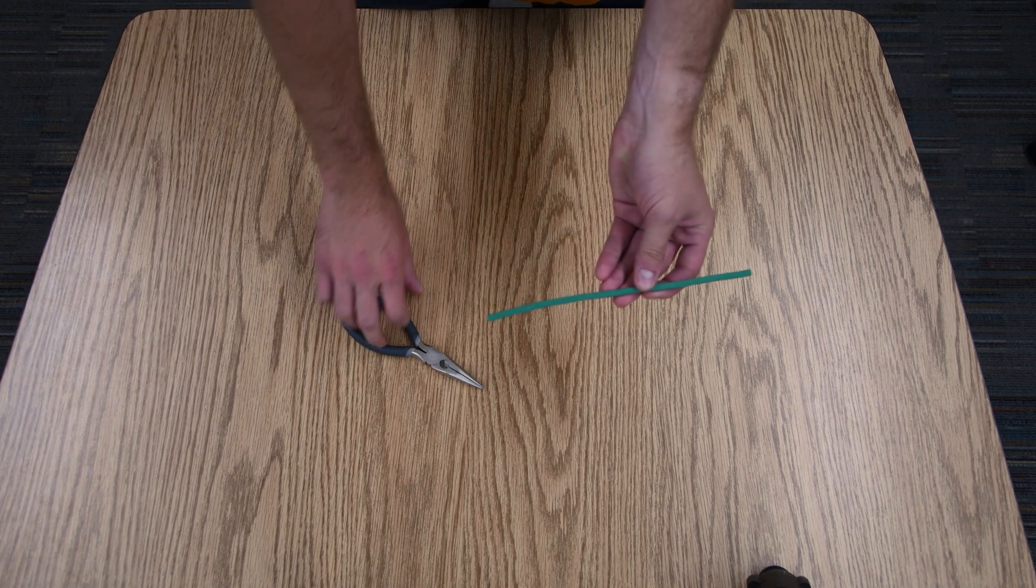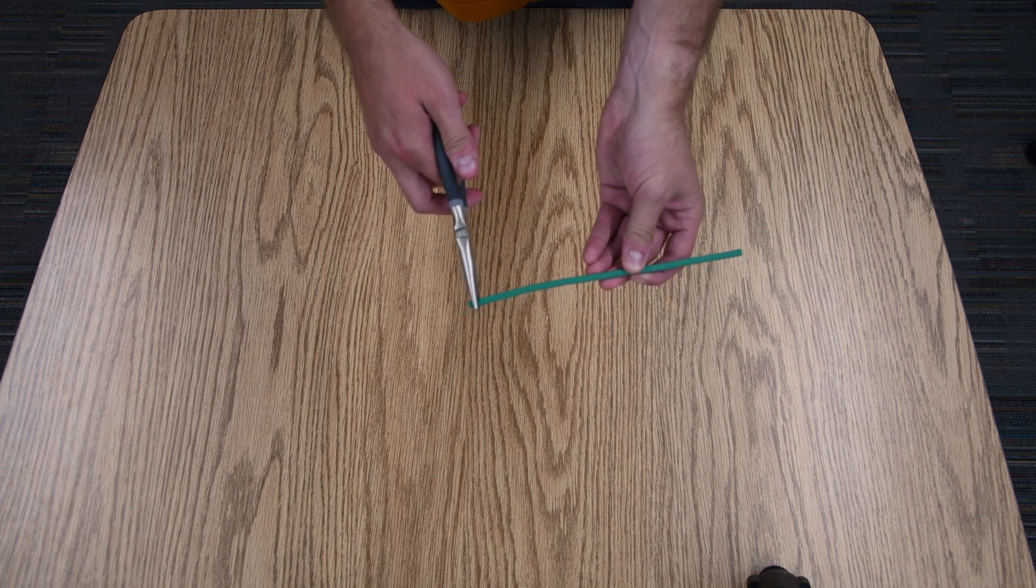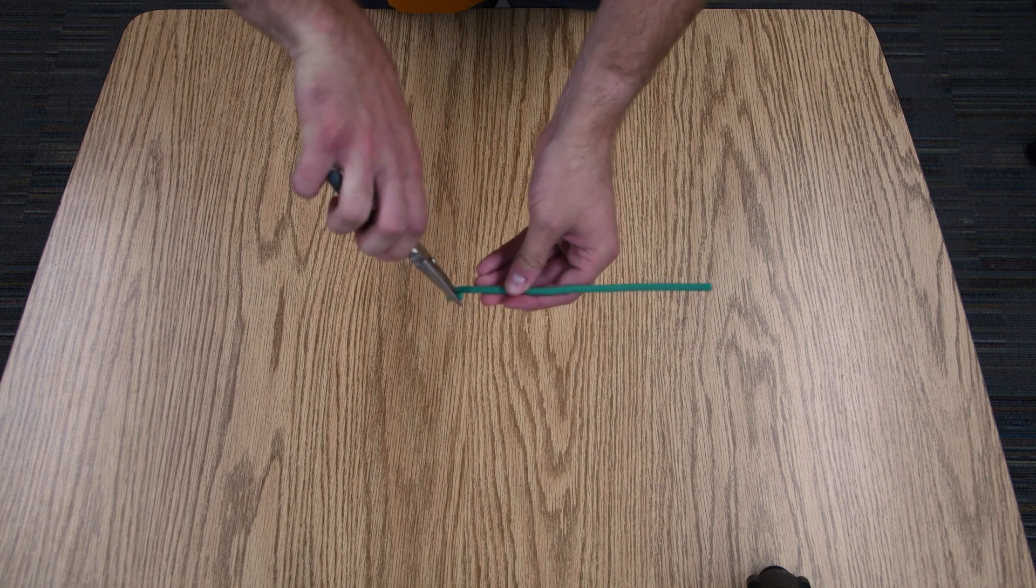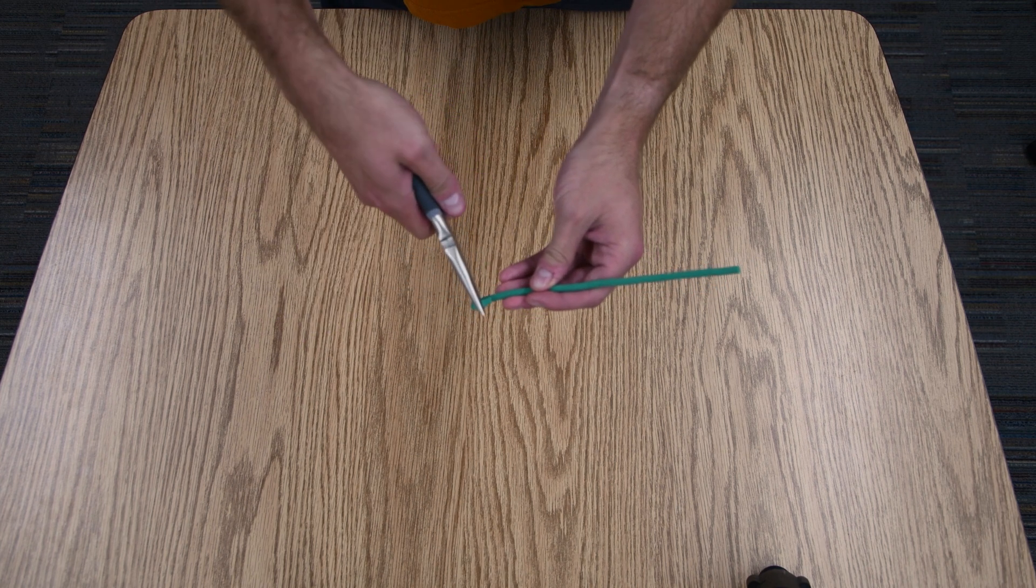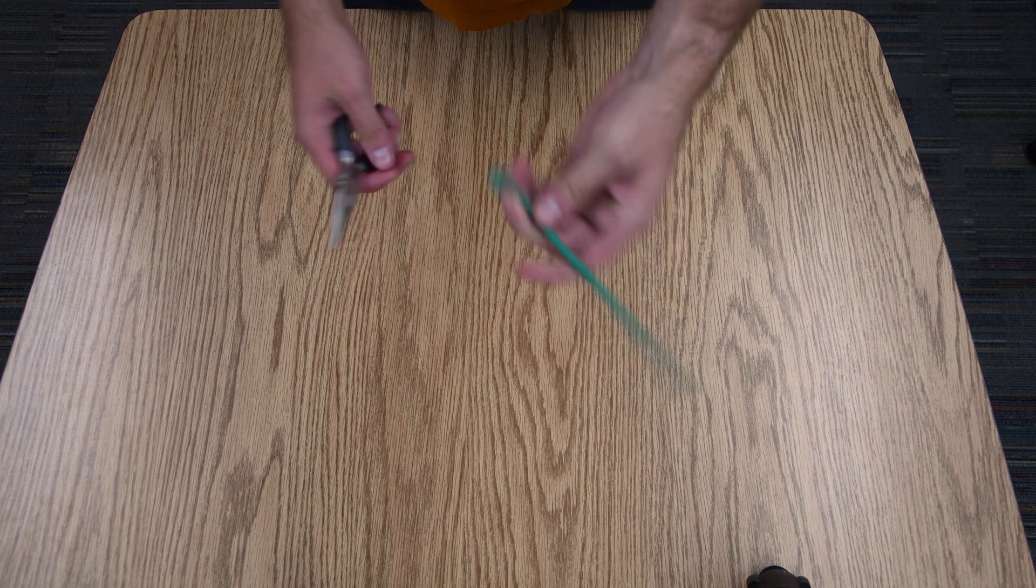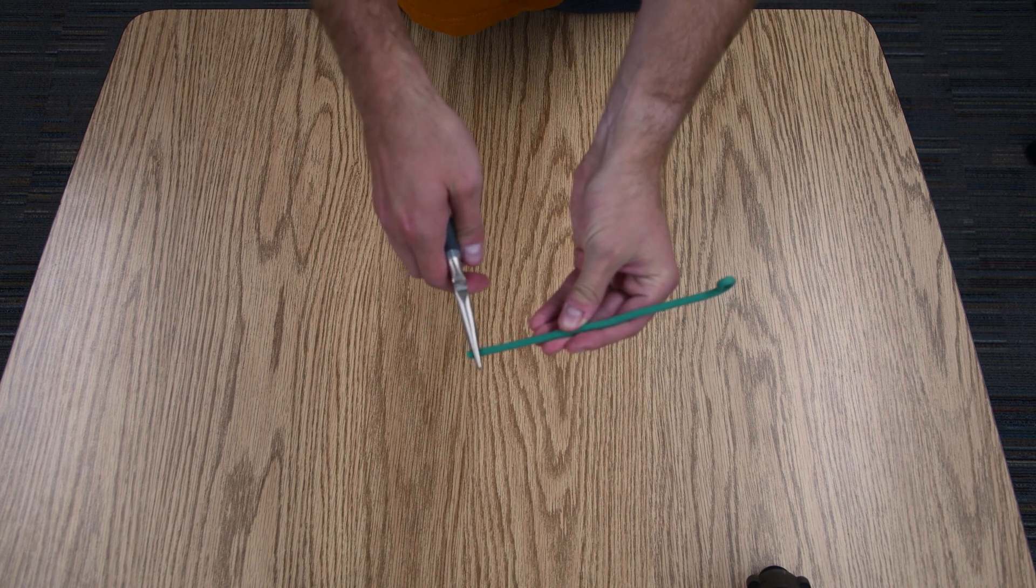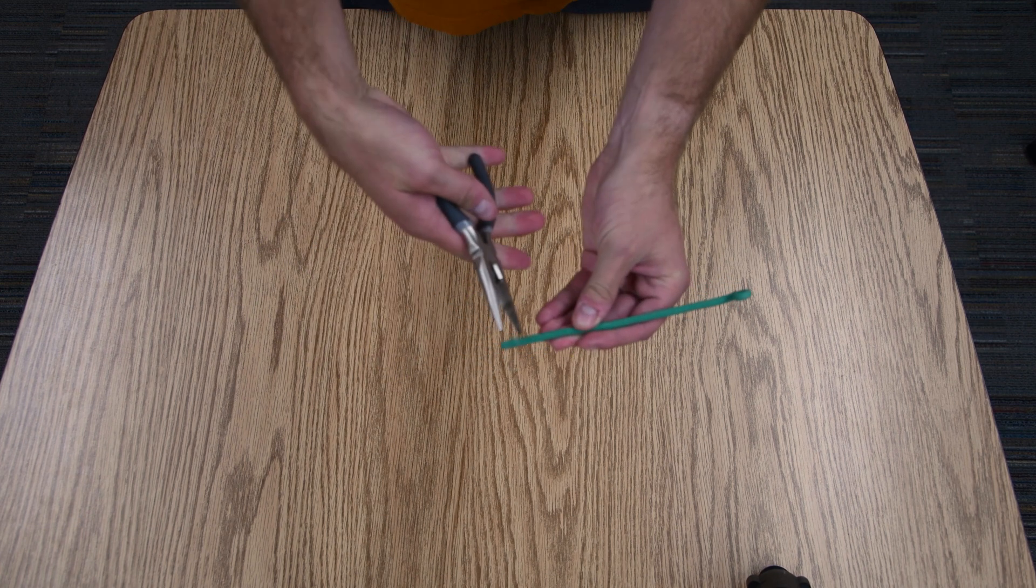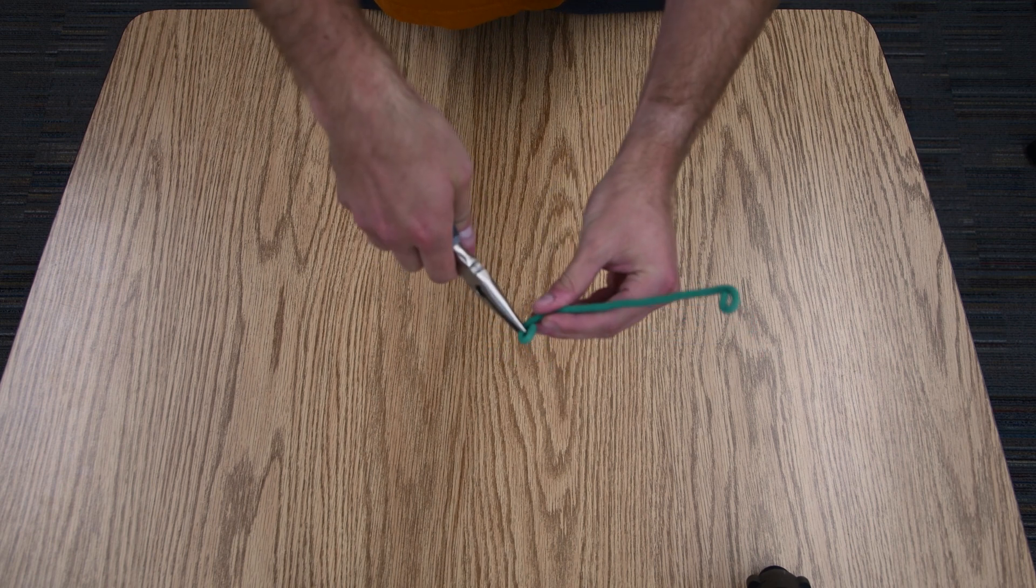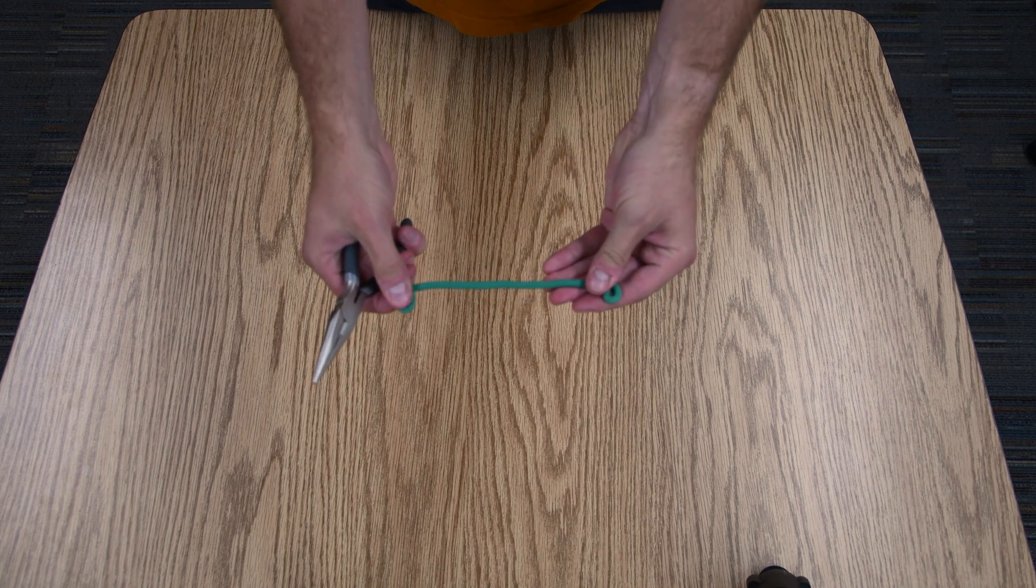Next what we're going to do is grab the very end with the pliers and just roll it inwards to make a loop. Close it shut just like that. We're going to do the same thing on the other side.